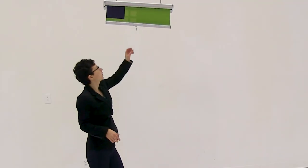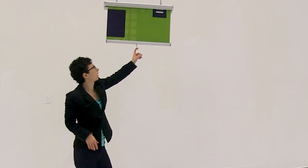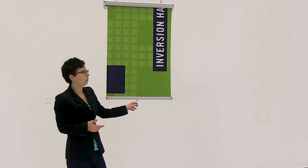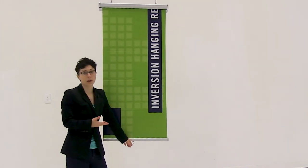Once I have my loop attached, I'm ready to pull down on my retractor. What's great about the inversion hanging retractor is that you can adjust it to multiple heights.